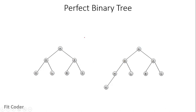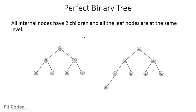The third type is perfect binary tree. A perfect binary tree is one in which all the internal nodes have two children and all the leaf nodes are at the same level. In the first tree, all the leaf nodes are at the same level and all the internal nodes — those nodes which are not leaf nodes — have two children. So this is a perfect binary tree.